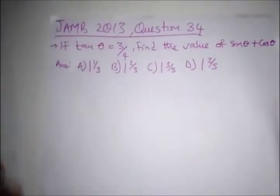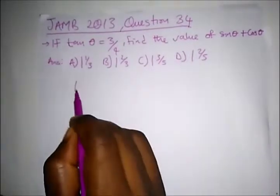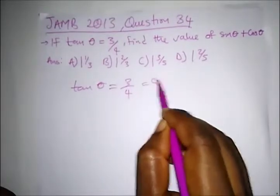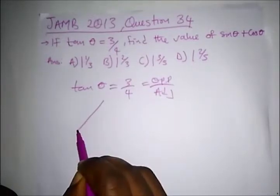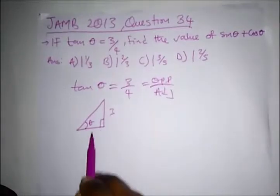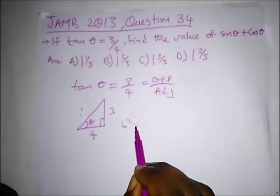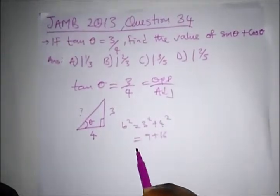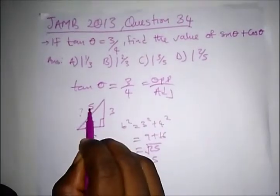It says: if tan θ is equal to 3 over 4, find the value of sin θ plus cos θ. tan θ = 3/4, which is opposite over adjacent. Drawing our triangle, the opposite is 3 and the adjacent is 4. To find the hypotenuse: b² = 3² + 4² = 9 + 16 = 25, so b = 5.